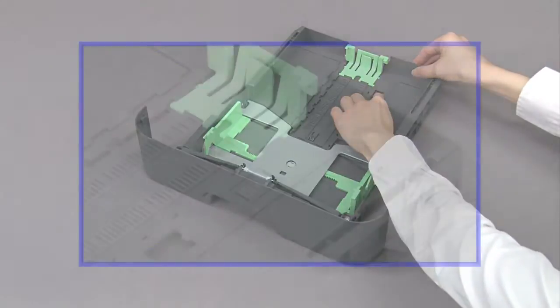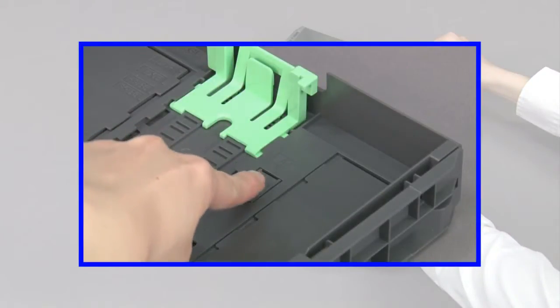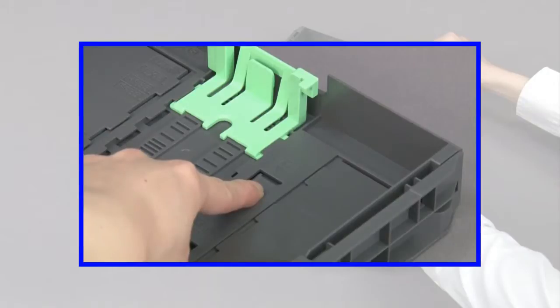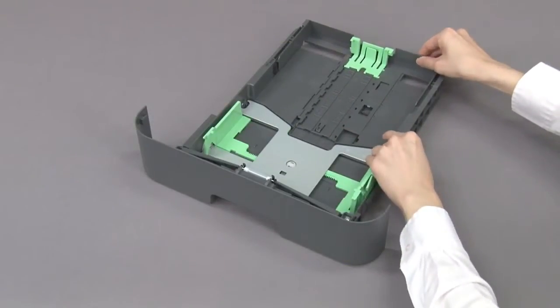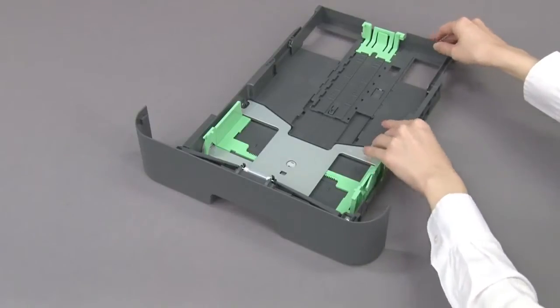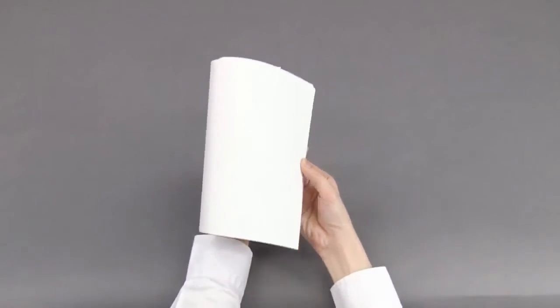Press the release button in the bottom of the paper tray and then pull out the back of the paper tray. Fan the paper.